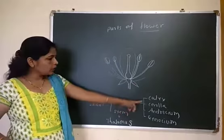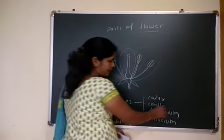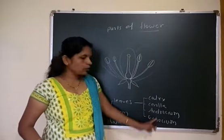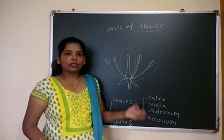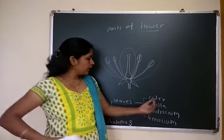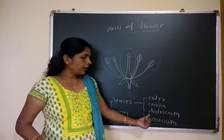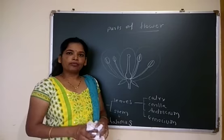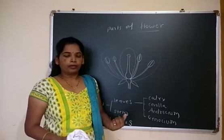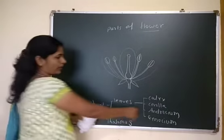Calyx and corolla are known as accessory whorls, or non-essential whorls. While androecium and gynoecium are known as essential whorls, because calyx and corolla are not directly involved in sexual reproduction, whereas androecium and gynoecium are directly involved in sexual reproduction.